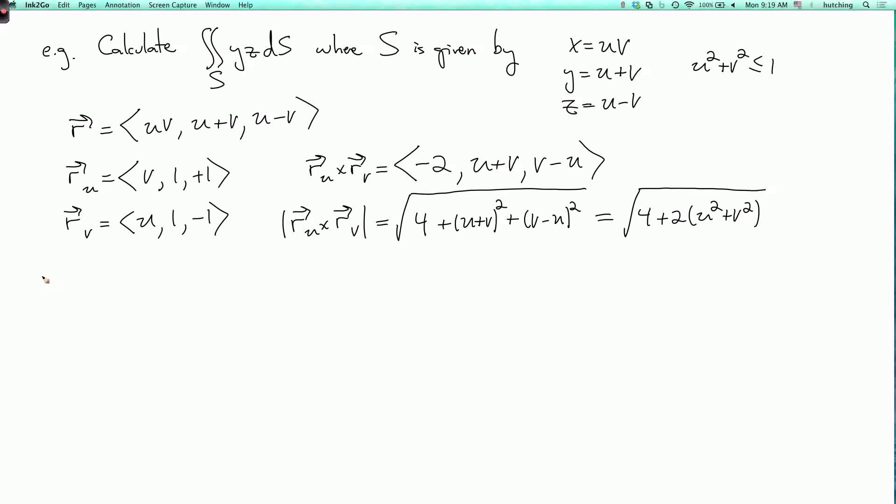So that's our magnification factor, and now we can write down the integral. The double integral over S of yz ds is the double integral over the domain of what? First I have to write y and z in terms of u and v. I use the parametrizing equations here. So y is u plus v and z is u minus v. Then I put in the magnification factor, which is the square root of 4 plus 2 times u squared plus v squared dA. So this is y, this is z, and this is the magnification factor.